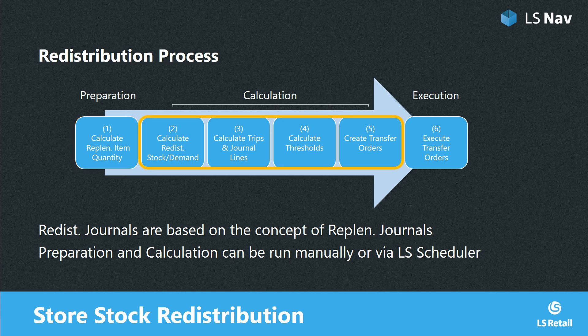In the calculation phase, we have four steps. First, we calculate the redistribution stock and demand for items and variants across all stores. Then we calculate the optimal trips, which are transfer orders to fulfill the demand. Next, we calculate thresholds — business rules to avoid uneconomical transfer orders — which is an optional step. Finally, we create the transfer orders from the redistribution journal. The first two phases, preparation and calculation, can be run manually or fully automated via LS Scheduler. In the execution phase, we execute the transfer orders: picking and shipping in the supplying stores and receiving in the destination stores.